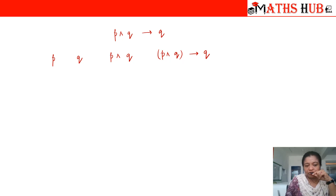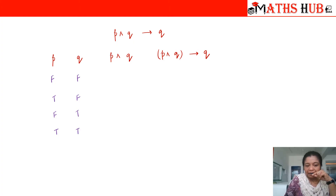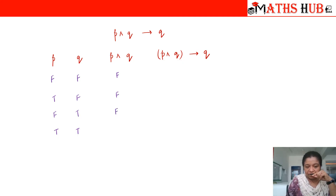The statements can be both false, one true and one false, or both true. Now let's see the truth values of p∧q. F∧F is F, T∧F is F, F∧T is F, and T∧T is T.